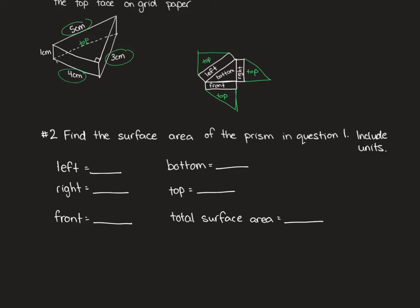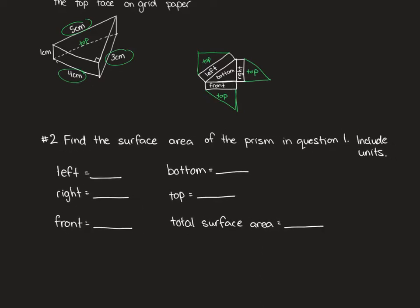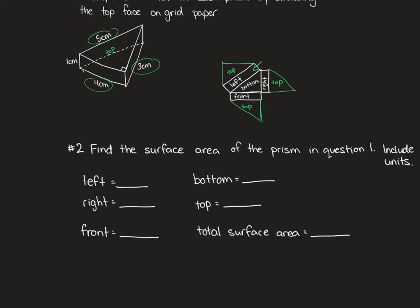So if we look at the left face here, it might be a little bit hard for us to see, but it has a length of five and a height of one. So what would the area of the left side be? It would be five centimeters squared. Now, the front side is four by one. So what would the area of the front side be? It would be four centimeters squared.